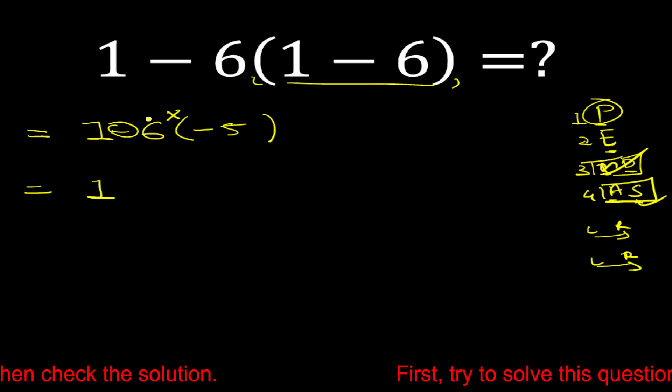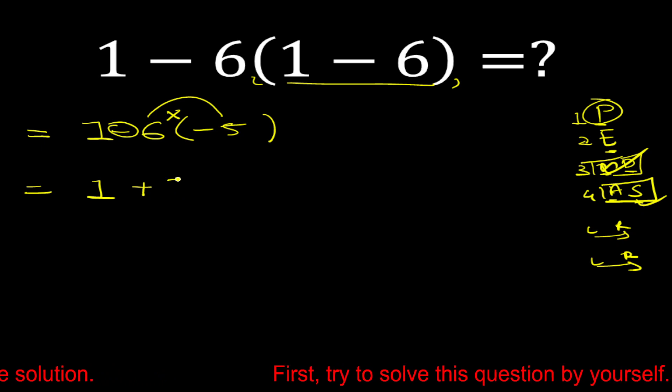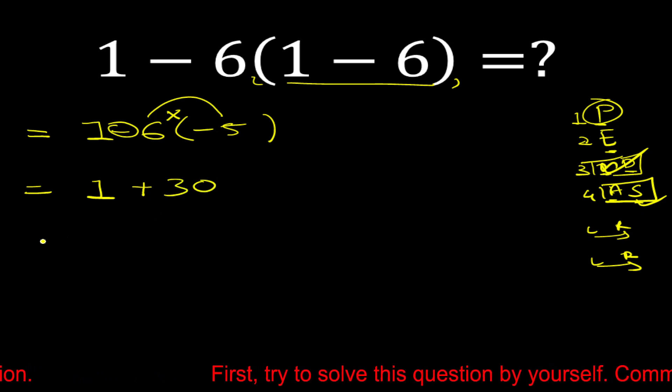So 1. Now multiply minus 6 multiply minus 5 is equal to plus 30. So 1 plus 30 is equal to 31. Okay.